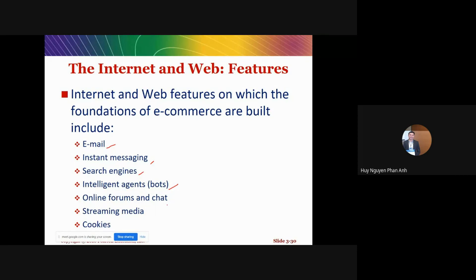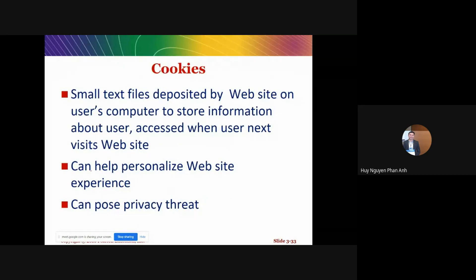We also have forums, chat, online streaming media such as Netflix, and cookies. Cookies are files that store the historical actions of a specific user, allowing personalized experiences — like the programmatic advertising we discussed. However, cookies can pose privacy threats because they record all of our actions online and store user information, raising privacy concerns.